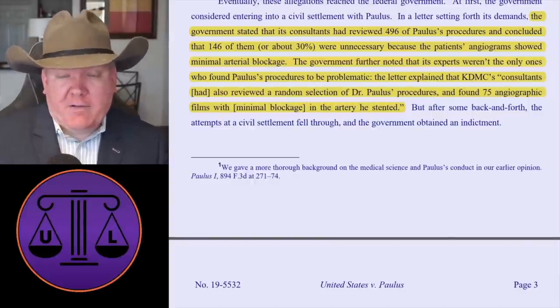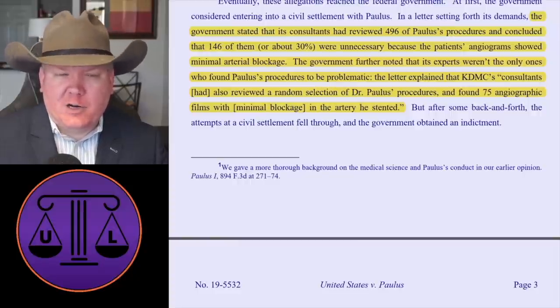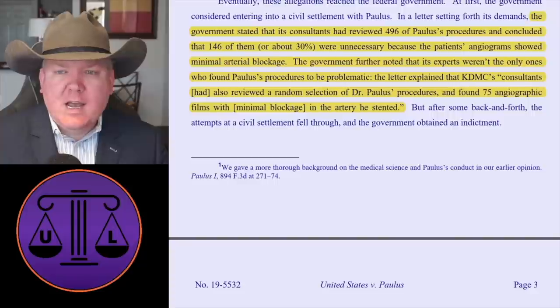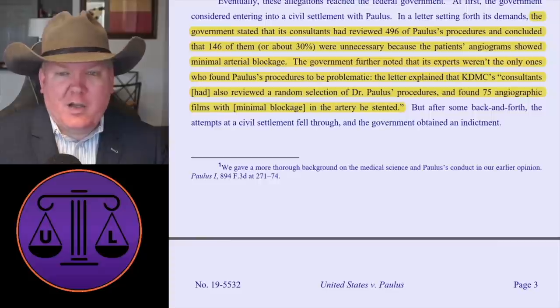The allegation is that he was padding his bills, doing work that was unnecessary — performing procedures even though he didn't need to. So it's basically insurance fraud, Medicare fraud — the allegation that he was making these false reports. The government stated that its consultants had reviewed 495 of Dr. Paulus's procedures and concluded that 146 of them, or about 30%, were unnecessary because the patients' angiograms showed minimal arterial blockage. The consultants also reviewed a random selection of procedures and found 75 angiographic films with minimal blockages in the arteries that he had stented.